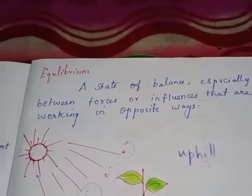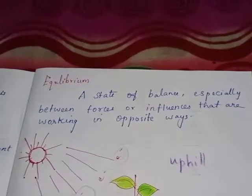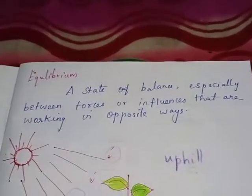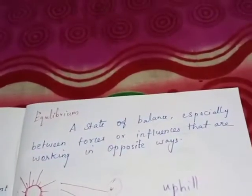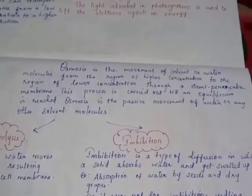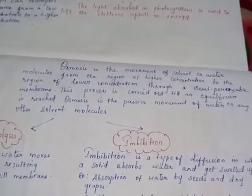This process is continuously carried out until equilibrium is reached. What is meant by equilibrium? Equilibrium is a state of balance, especially between forces or influences that are working in opposite ways. Osmosis is the movement of solvent or water molecules from higher concentration to lower concentration through the semi-permeable membrane, and this process is carried out until equilibrium is reached.